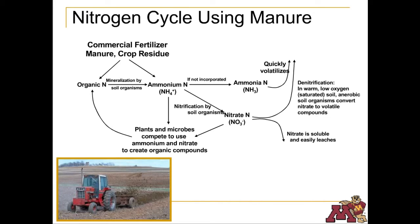Nitrogen is probably the most transient nutrient. It can be produced by soybeans, alfalfa, and other legumes. Nitrogen can also be added to the soil in the form of fertilizer or manure. In the form of ammonia, nitrogen can be lost in a gas form through volatilization.